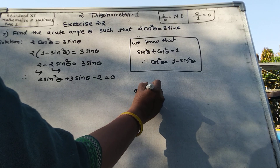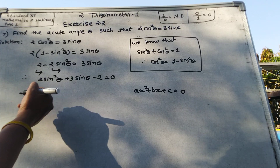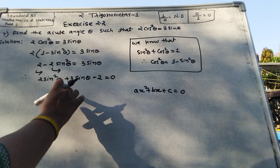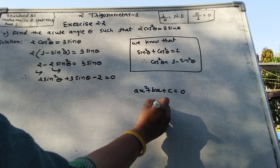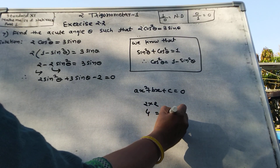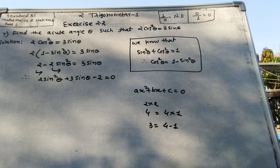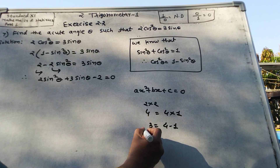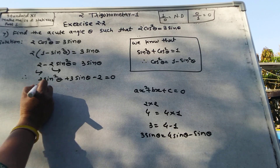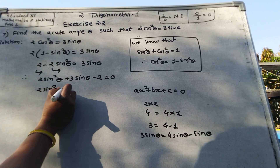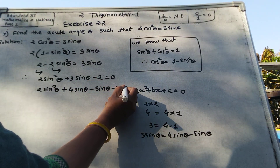This equation is like a quadratic equation of the form Ax squared plus Bx plus C equals 0. To find the roots, we split the middle term. Since 2 times 2 equals 4, and 3 equals 4 minus 1, we rewrite 3 sin theta as 4 sin theta minus sin theta. So: 2 sin squared theta plus 4 sin theta minus sin theta minus 2 equals 0.